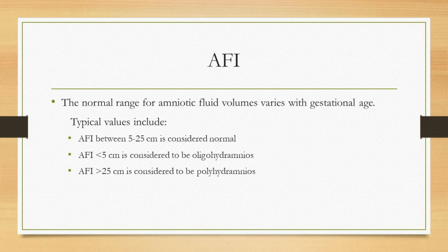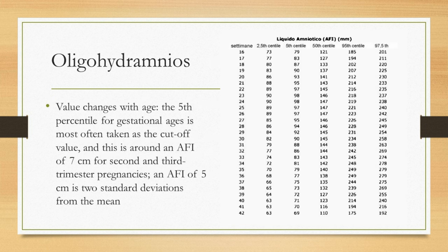The normal range for amniotic fluid volumes varies with gestational age. Typical values include AFI between 5 to 25 centimeters. AFI less than 5 centimeters is considered oligohydramnios. AFI more than 25 centimeters is considered polyhydramnios. Values change with gestational age, and on the right side there is a chart representing amniotic fluid with respect to gestational age.